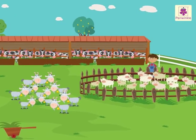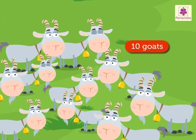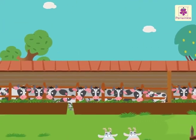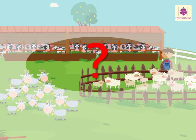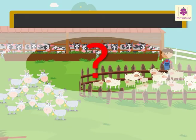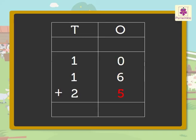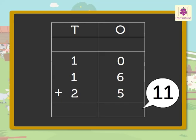Look at the animals! There are 10 goats, 16 sheep, and 25 cows. Now let us see how many animals there are in all. Here we have to add 10, 16, and 25. Add the ones: 0 plus 6 plus 5, which is equal to eleven. Carry one ten to the tens column and write one in the ones column.